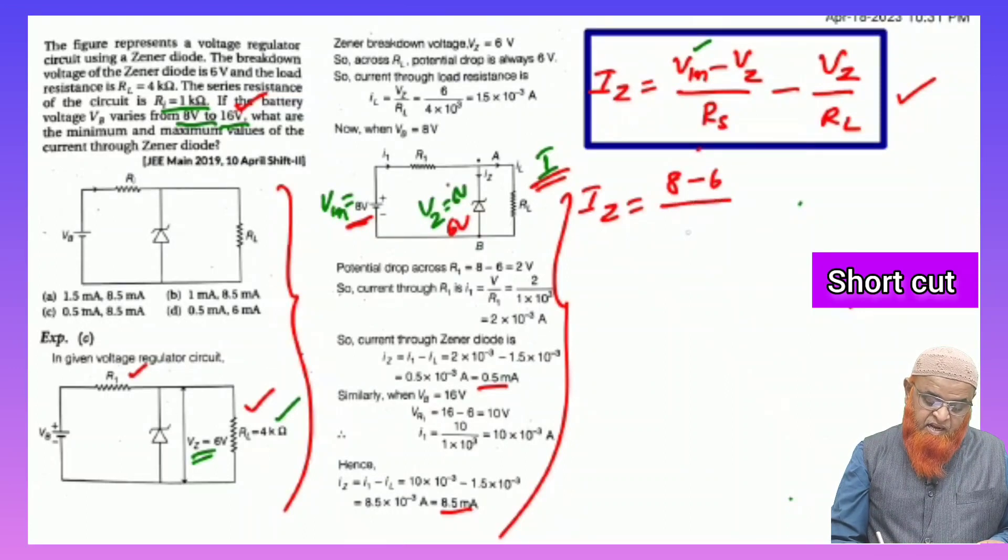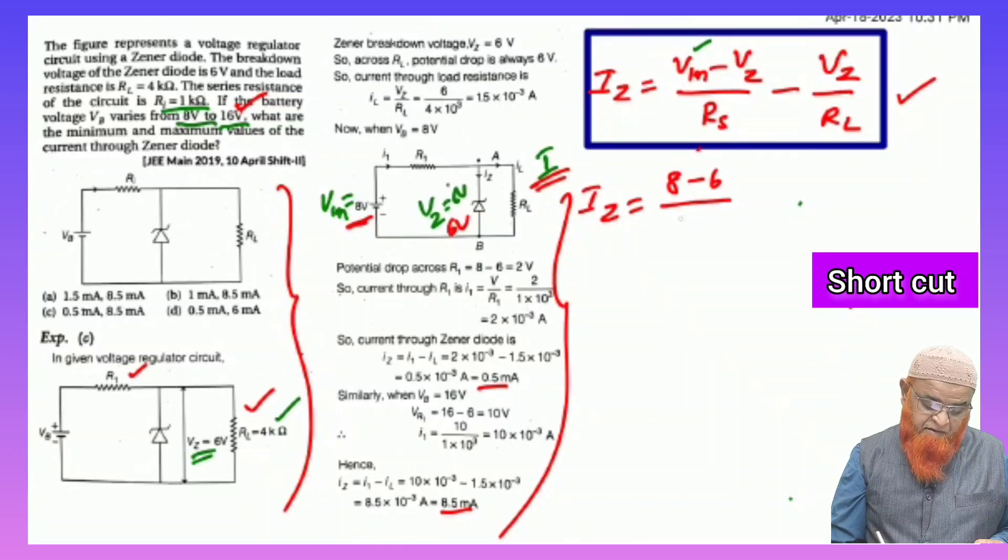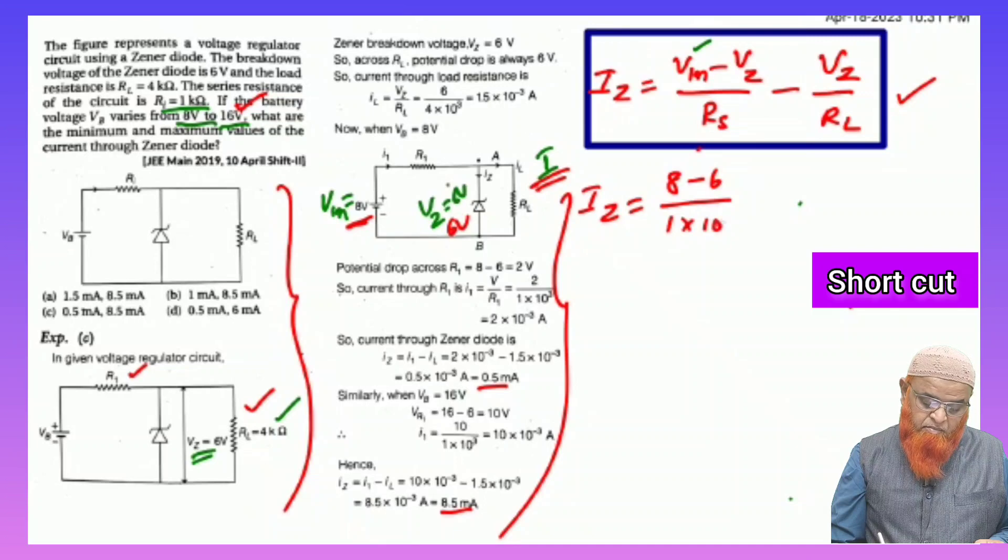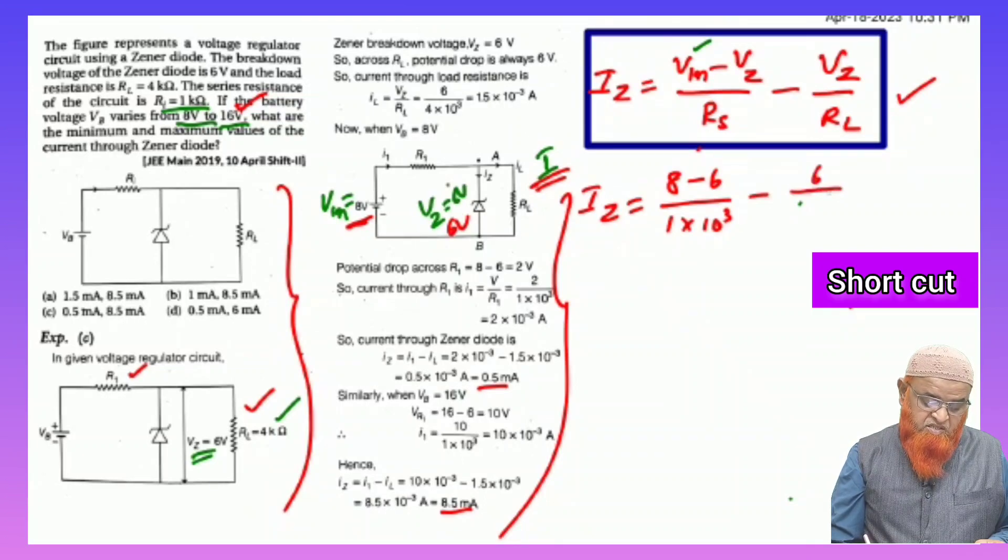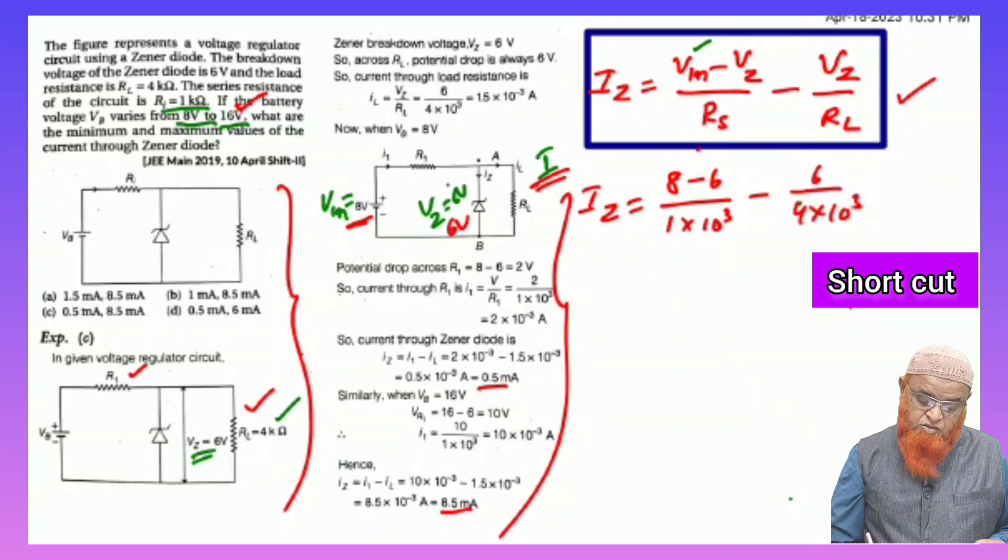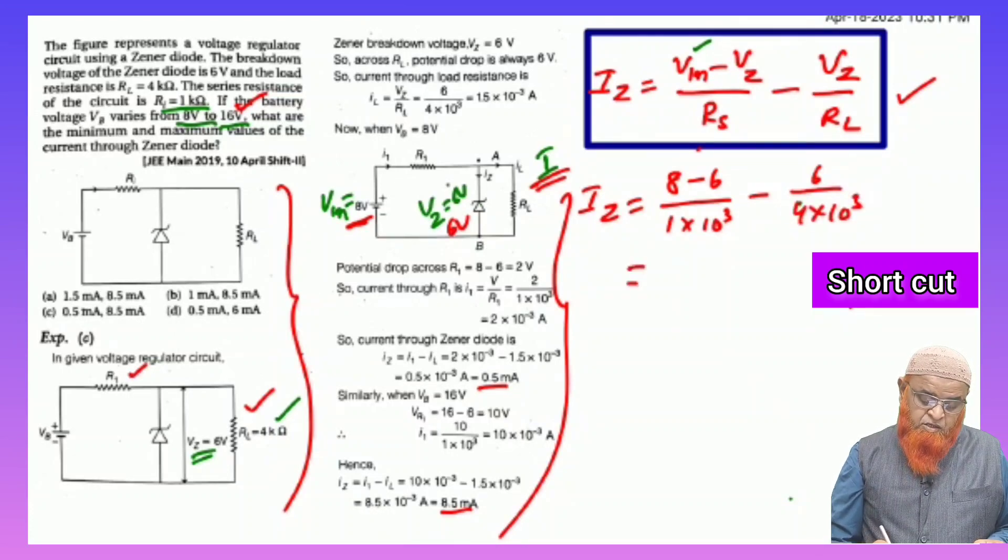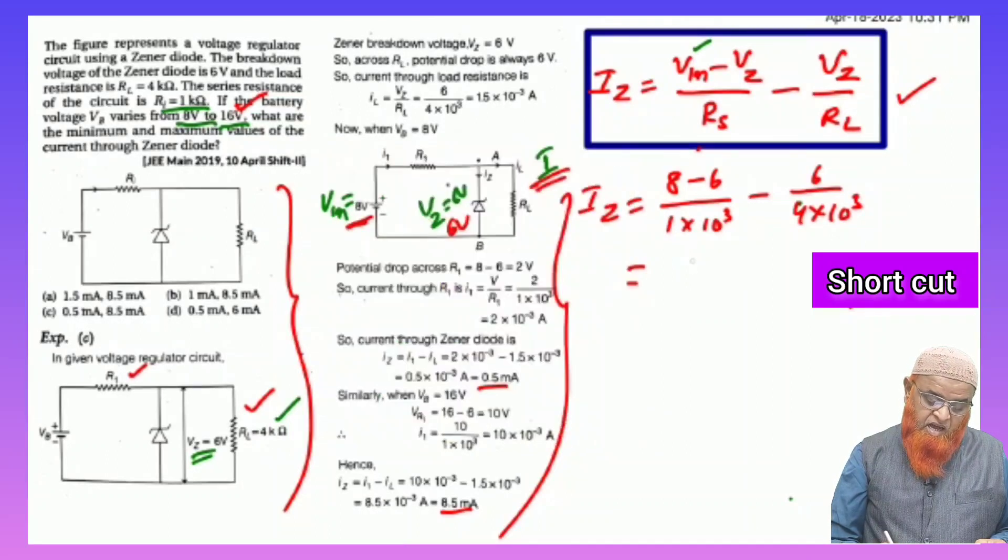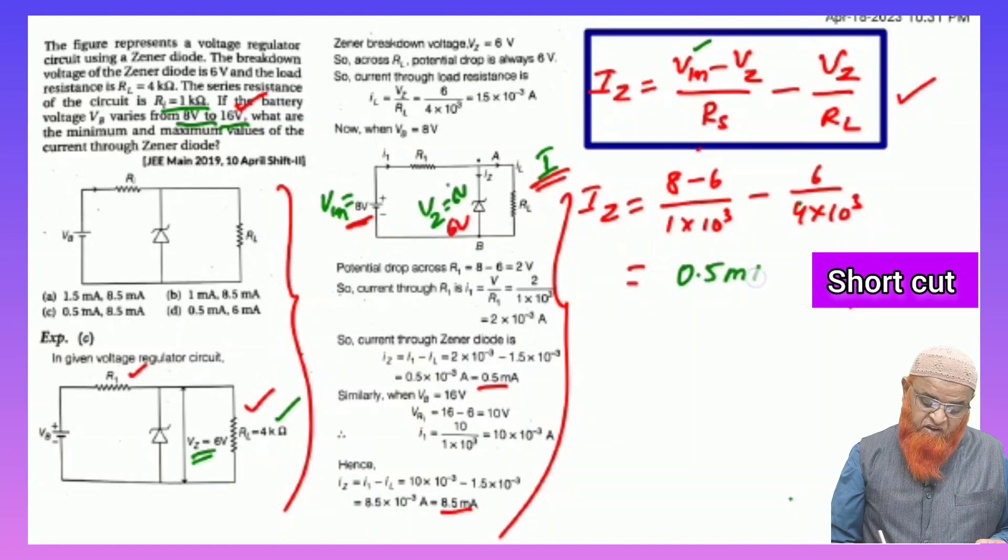So, 8 minus VZ, VZ is 6 divided by RL. What is RL here? Series resistance which is given. It is going to be 1 milliampere, 1 into 10 power 3. Minus VZ, what is VZ? 6 by RL. RL is 4 kilo ohms, so 4 into 10 power 3. So if you substitute in this, directly we are getting the answer as 0.5 milliampere.